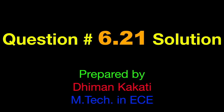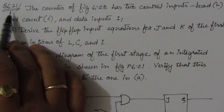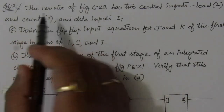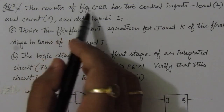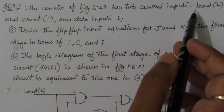Welcome to this problem solution series in digital electronics. I am solving problems from the book Digital Design by Maurice Mano and Michael Ciletti. In this video I am solving problem number 6.21 from chapter number 6. The problem is: the counter of figure 6.28 has two control inputs.